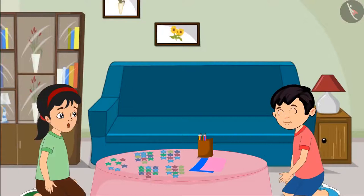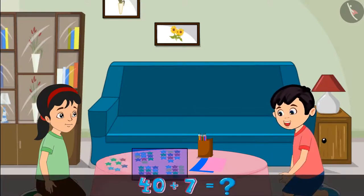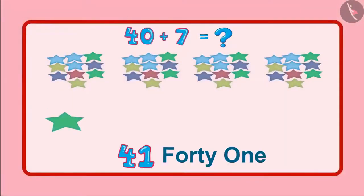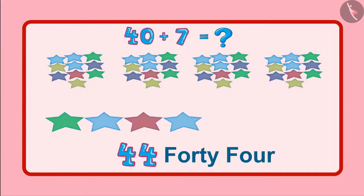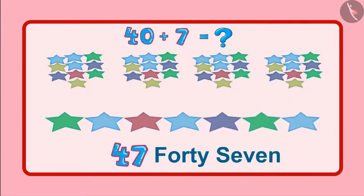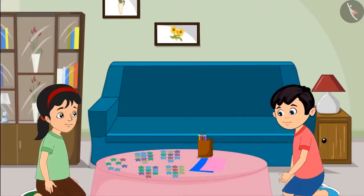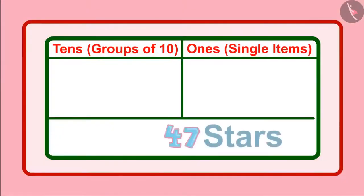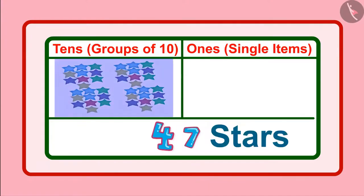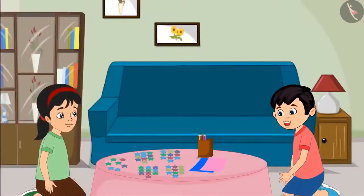Now, how many stars are left, Chotu? There are 7 stars left. This means 40 stars and 7 stars — so these will be 41, 42, 43, 44, 45, 46, 47. So the total number of stars is 47. Yes Chotu — this means we have 4 groups of 10 and along with this, 7 single units. Now let us decorate the birthday card with the help of these stars.